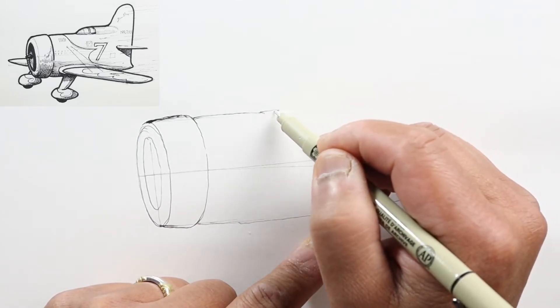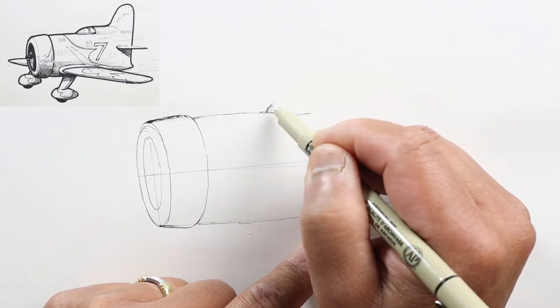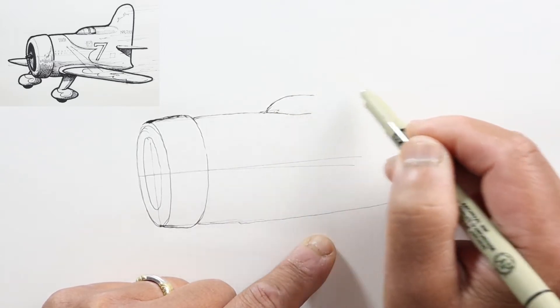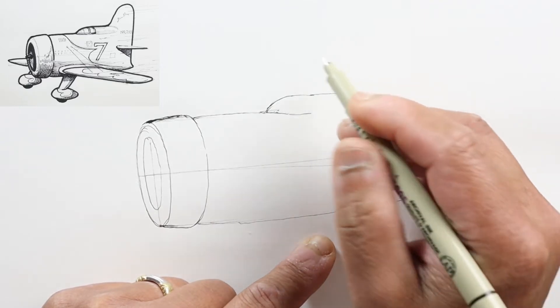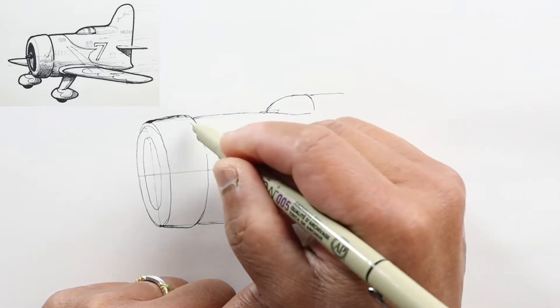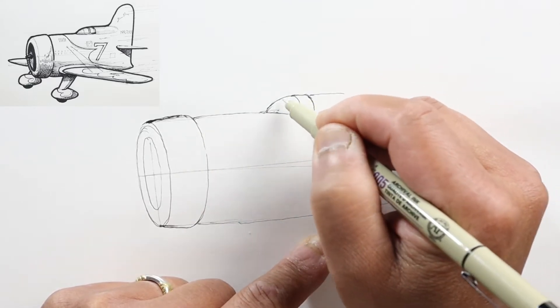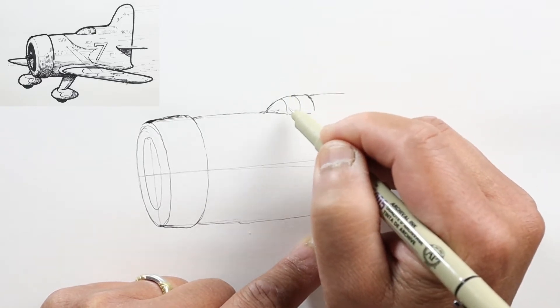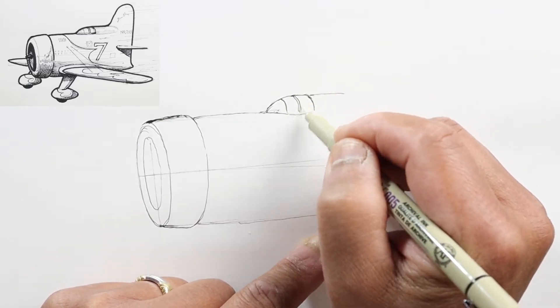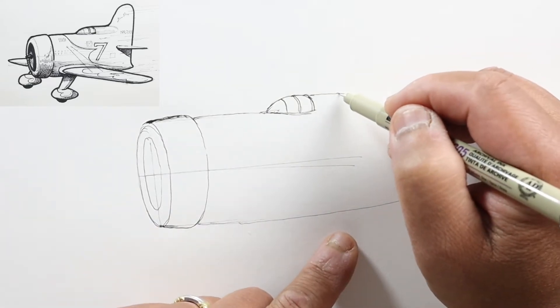Let's indicate that with a line that goes up and then back. We've got this curve that follows the oval shape, and we'll draw a couple lines here to indicate the parts of the canopy.